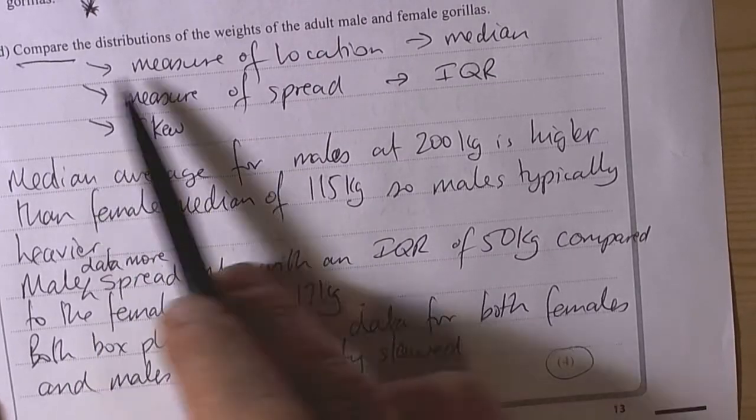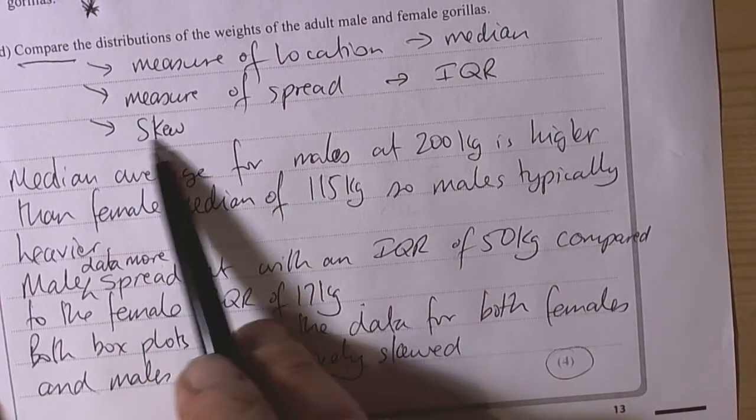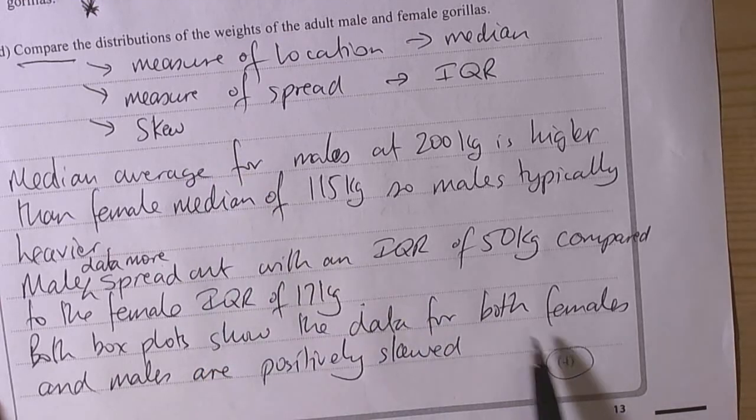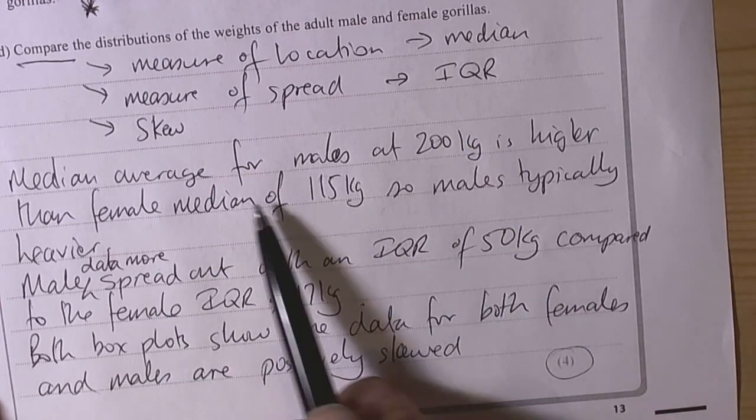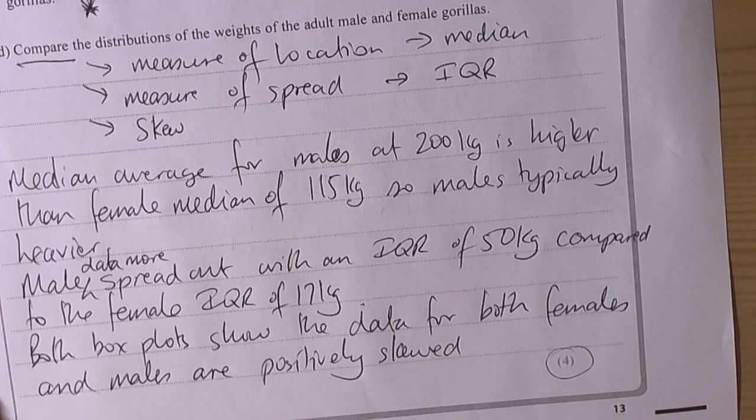So to compare the distributions then we're looking for a measure of location, a measure of spread and we could talk about the skew. So it's worth four marks so you put in quite a bit of detail and quote numbers when you're comparing. So that's a summary of things you could expect to do with data, calculating averages and plotting them on box plots, particularly using outliers properly.